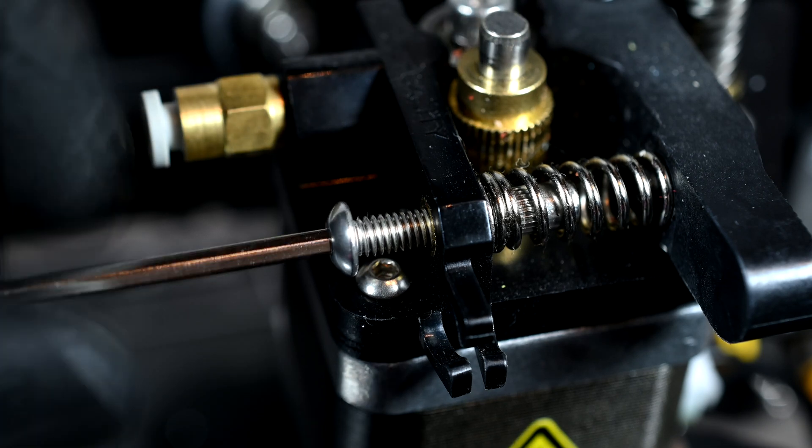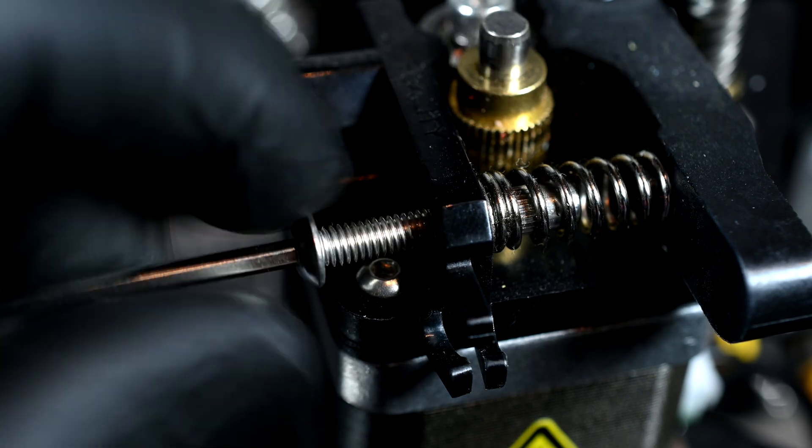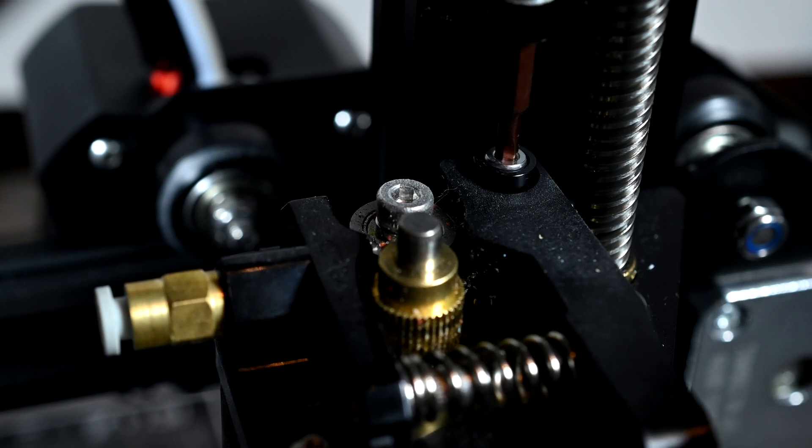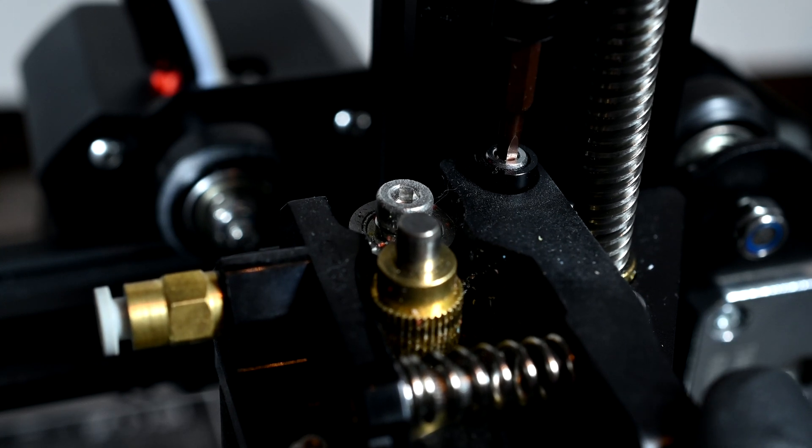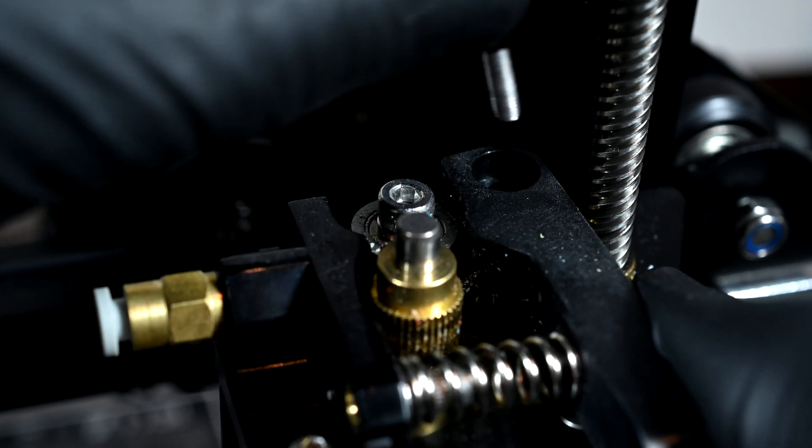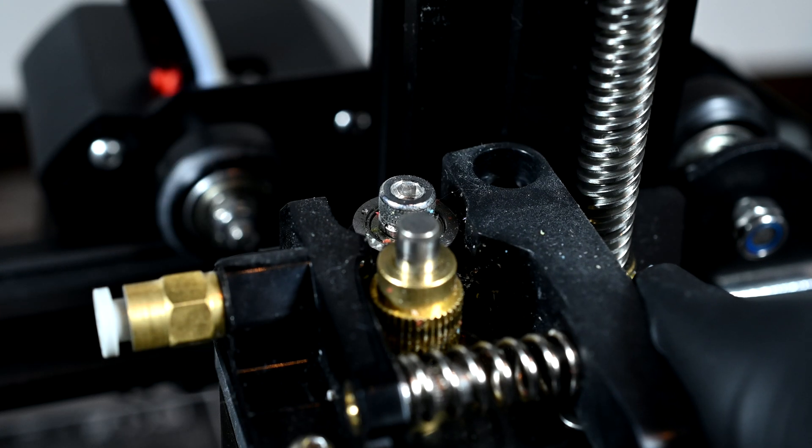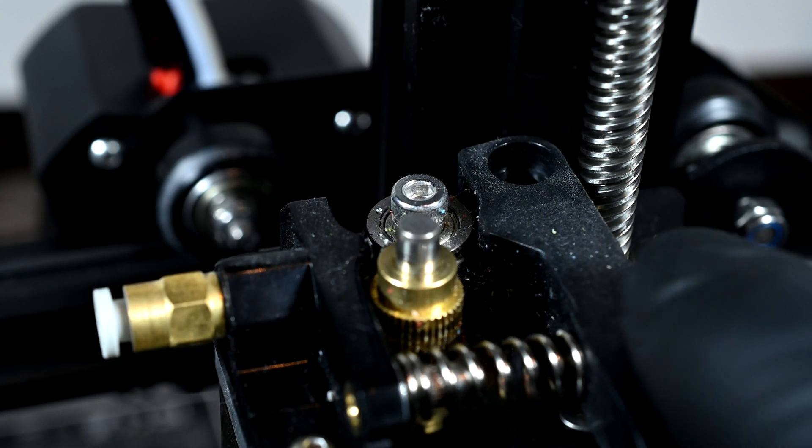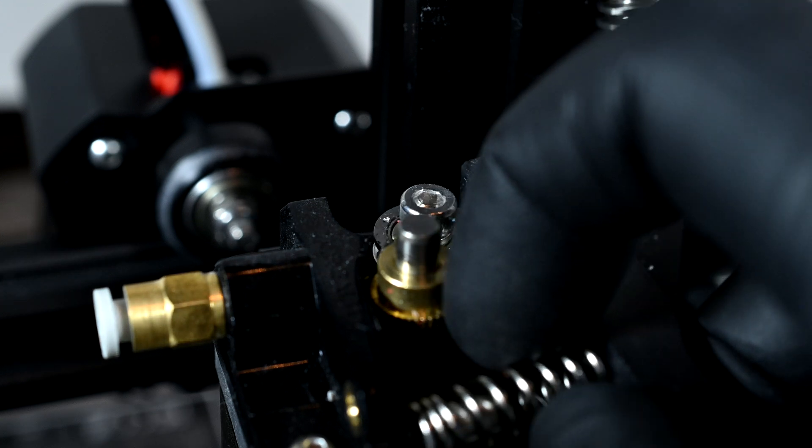Now I'll remove the M4x12 screw that holds the spring tensioner. Next, the M3x18 column screw that holds the idler wheel arm needs to be removed carefully. The spring is still putting tension on this arm, so it may be difficult to remove the screw without wiggling it a bit. Once freed, the arm can be finally lifted up.